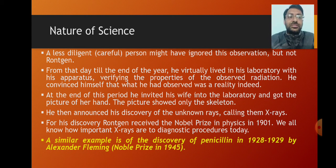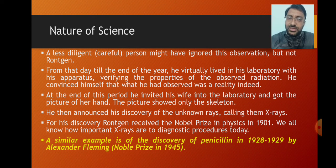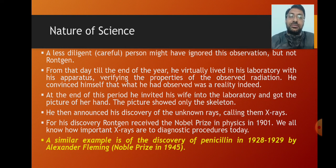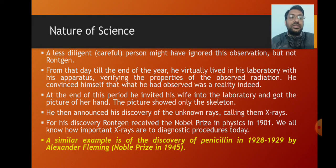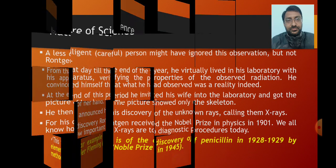A similar example is of the discovery of penicillin. Isi tarah se hum penicillin ki discovery ka example bhi le sakte hain — kaisi penicillin ki discovery hui, wo aap sab jaante hain. You will find how penicillin was discovered by Alexander Fleming, and for his discovery, Alexander Fleming ko bhi Nobel Prize mila in 1945. So this is the perseverance and tenacity that scientists have shown, aur usi badaule aaj itni discoveries hui hain science ke andar. So science demands tenacity and perseverance — tabhi discoveries hoti hain.